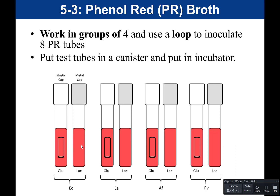As a group, you would have four organisms: E. coli, Enterobacter aerogenes, Alcaligenes faecalis, and Proteus vulgaris. To inoculate these broths, you would use a loop and aseptic technique. For example, if I was in charge of E. coli, I would use aseptic technique to pick up E. coli from a slant, add it to my glucose tube, re-flame sterilize my loop, go back, pick up more E. coli, and add it to the lactose tube. Each person would be responsible for making two tubes.